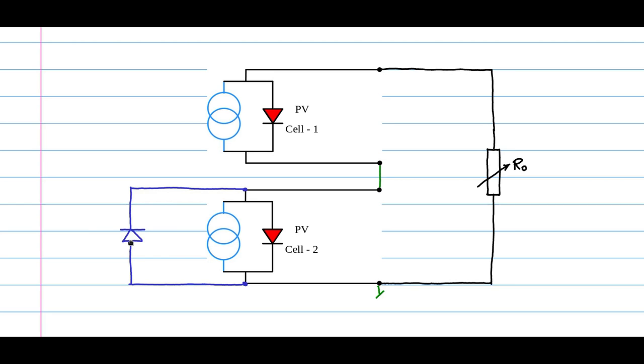In such a case, will this bypass PV cell 2? Will the circuit work? So let us consider for now that this is effectively going to bypass this cell under such condition. PV cell 2 is out of the system, it is bypassed.